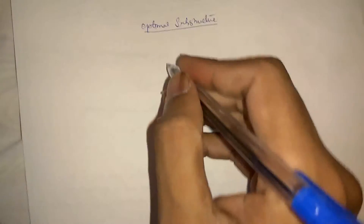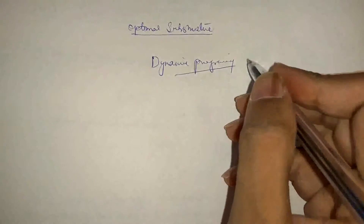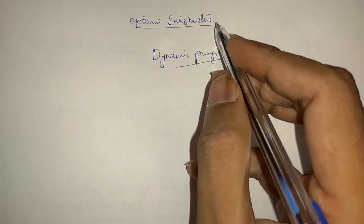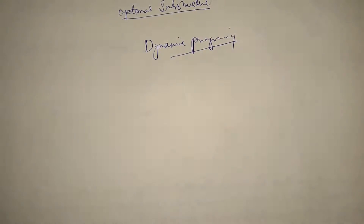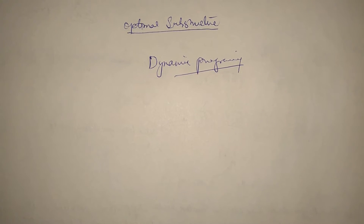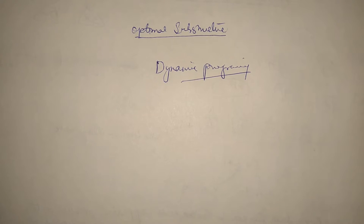Hello friends, my name is Nitish Raj and today we are going to study about optimal substructure. For dynamic programming technique to be used for solving optimization problems, we need two properties. The first property is optimal substructure and the second property is overlapping subproblems. I have explained overlapping subproblems in my previous video on dynamic programming. Now in this lecture we will study about optimal substructure.